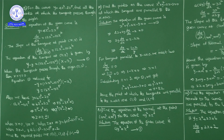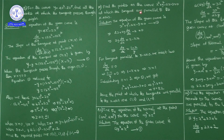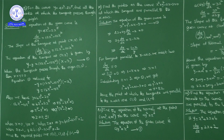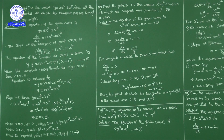Next, Question 19: find the points on the curve x² + y² - 2x - 3 = 0 at which tangents are parallel to the x-axis. Tangent parallel to the x-axis means slope of the tangent equals 0.